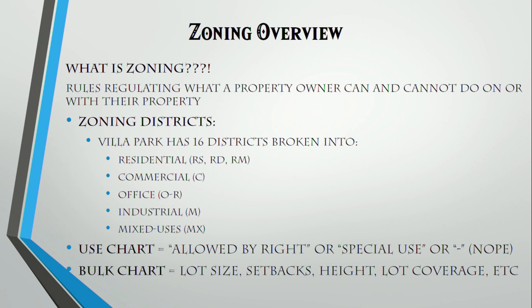The other thing that regulates zoning is the bulk chart. That establishes lot size, setbacks, building height, lot coverage — all those physical things you see on a site plan. They're all different per zoning district. For example, a residential side yard setback is six feet, but in some commercial districts it's zero because you want buildings touching each other as you walk down a street.